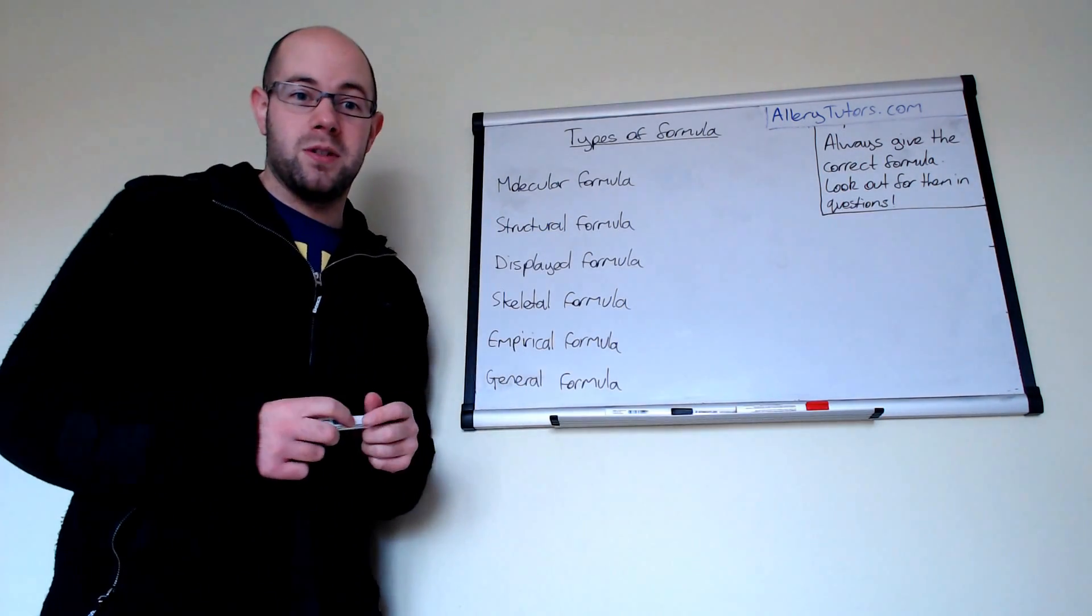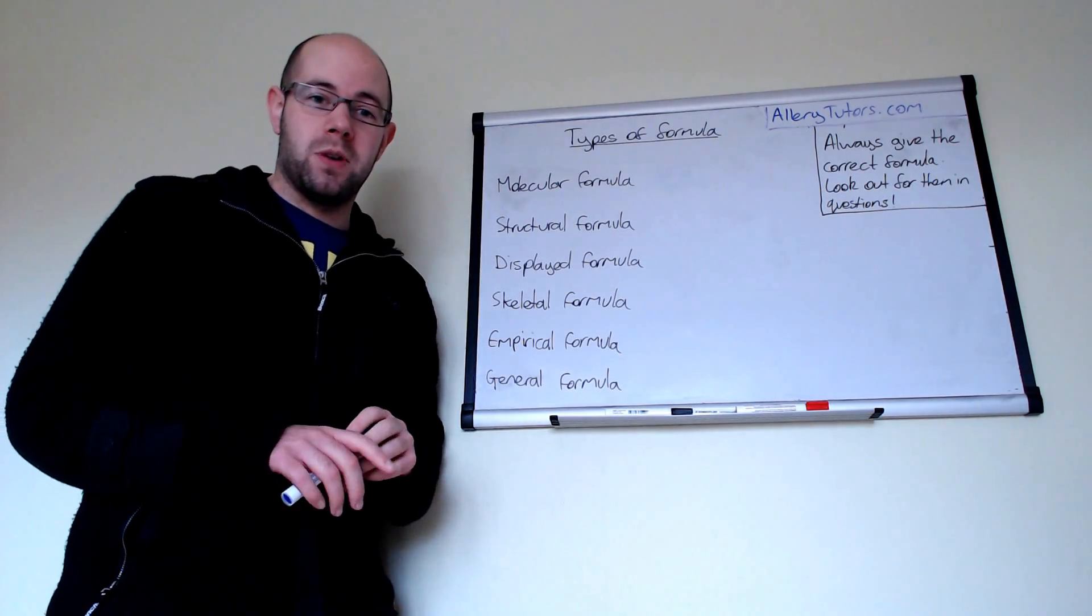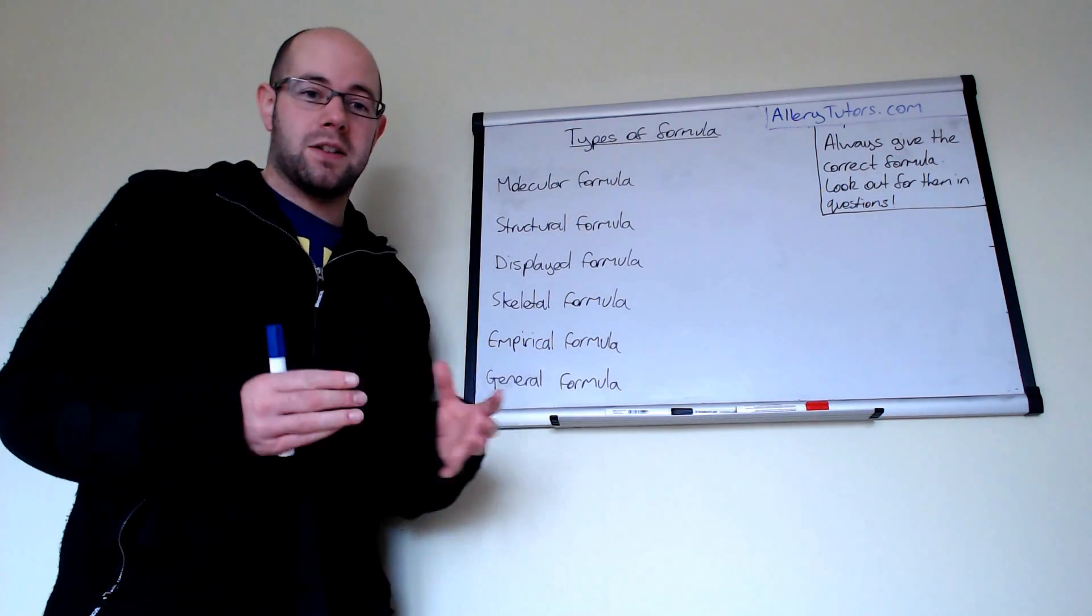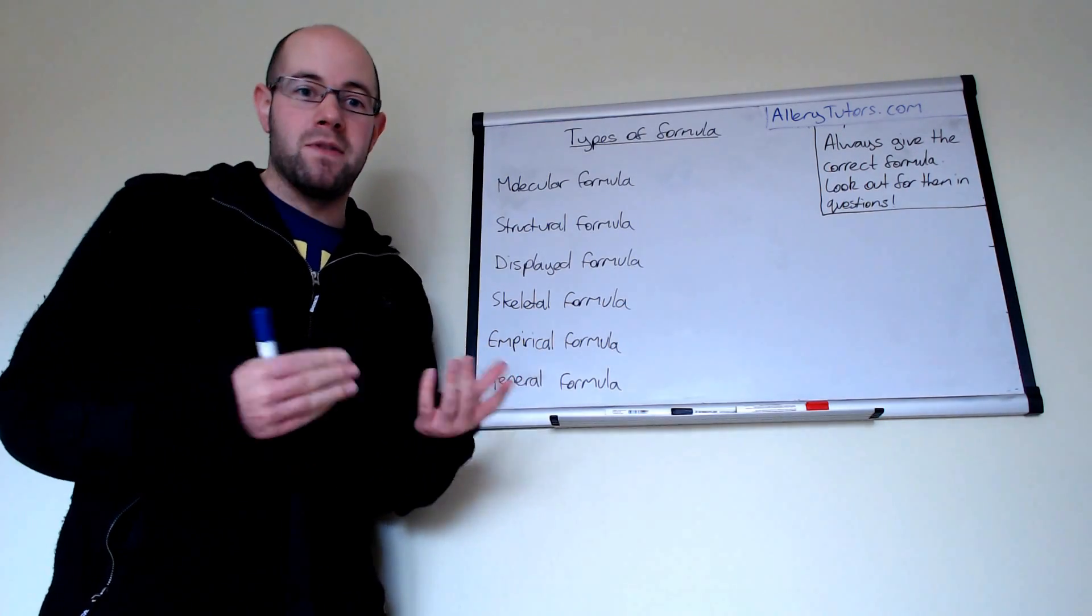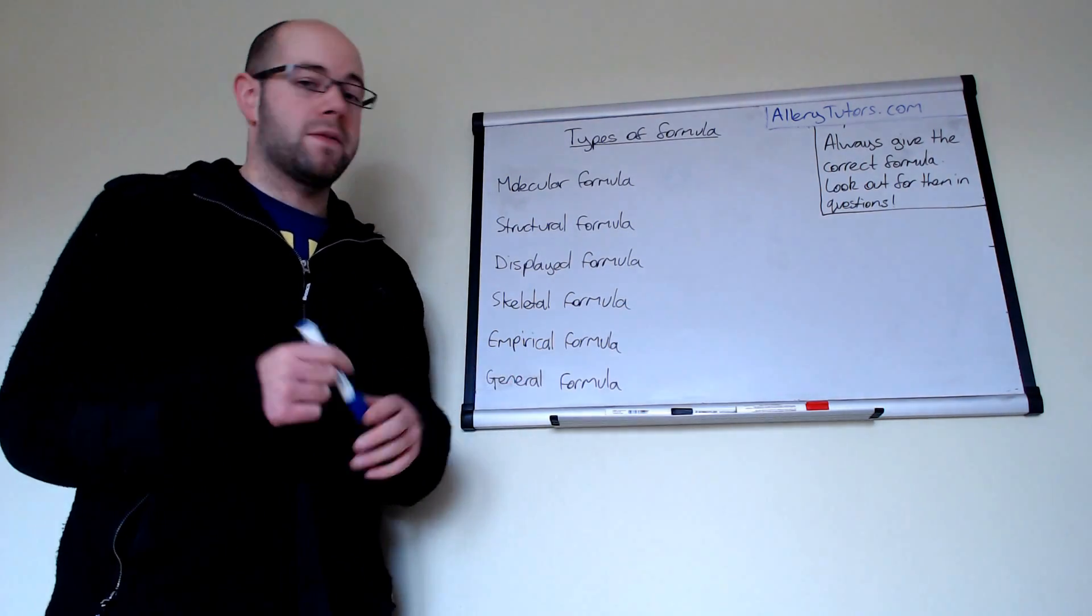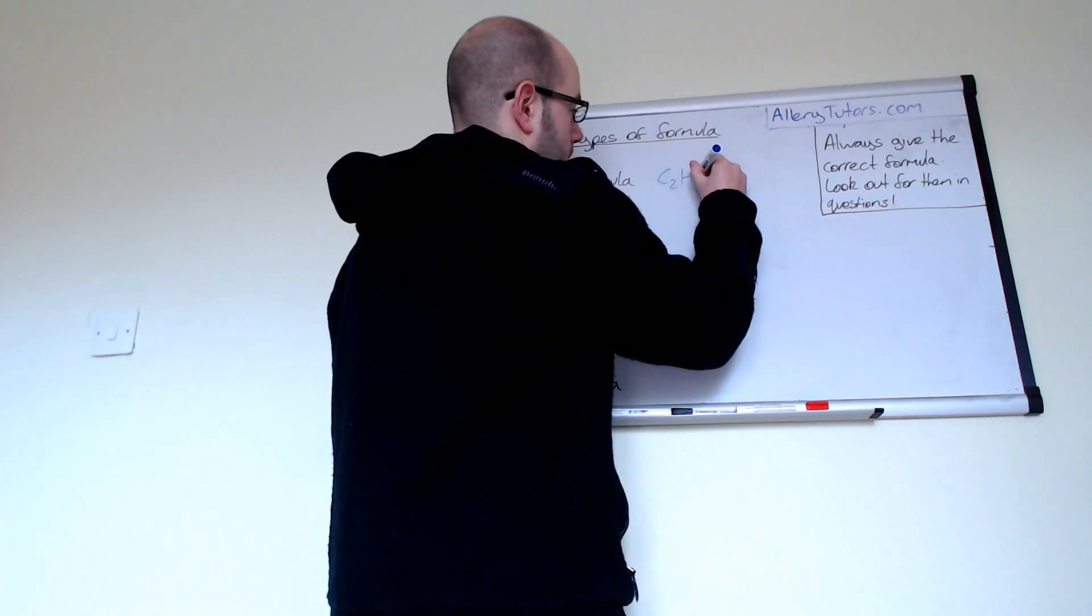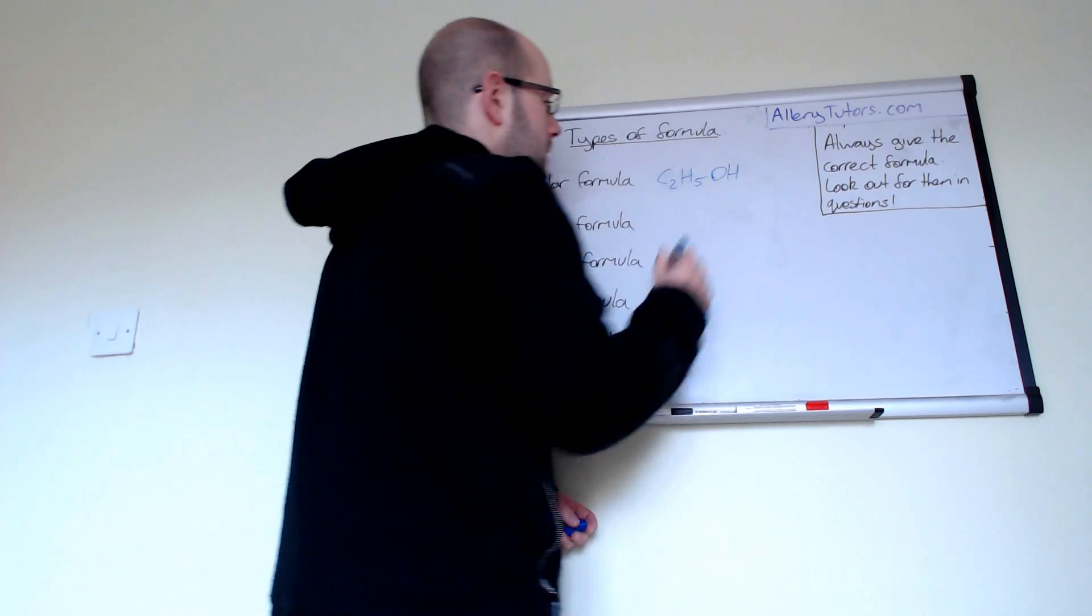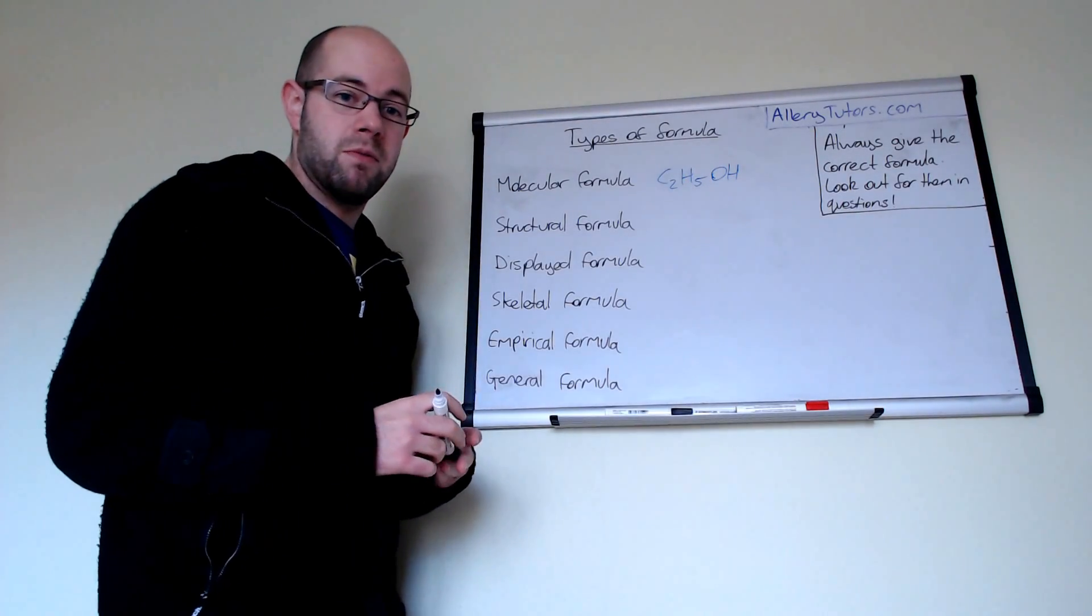If we start off with molecular formula, the molecular formula basically shows you how many atoms you have in your molecule. It's the basic formula that you would see every day, so for example you might have something like ethanol and ethanol is given the formula C2H5OH.